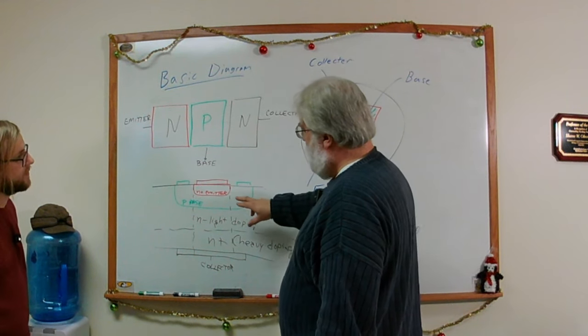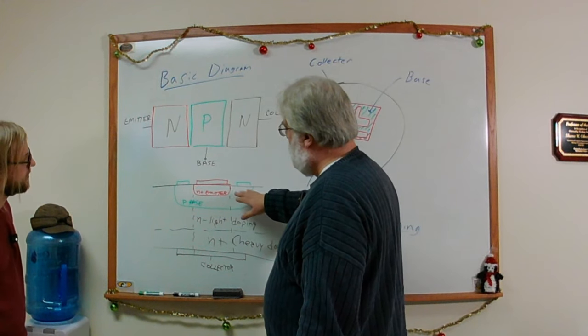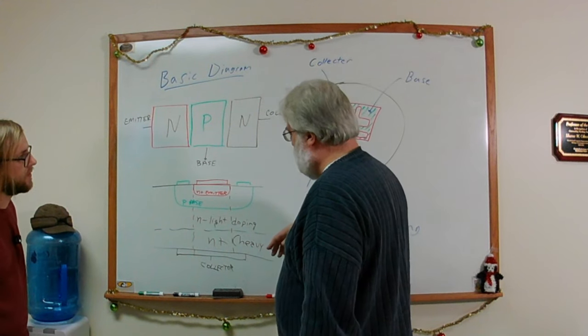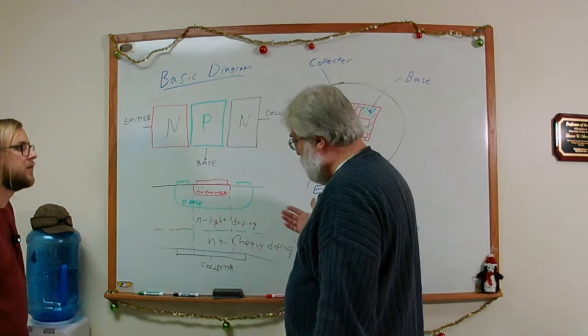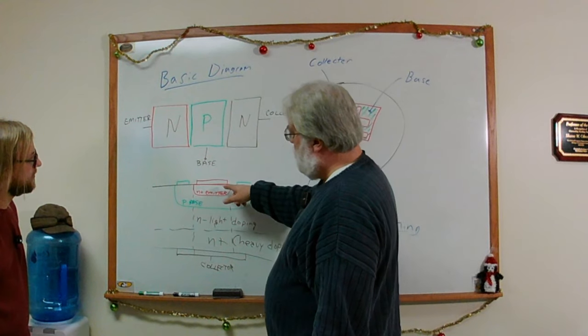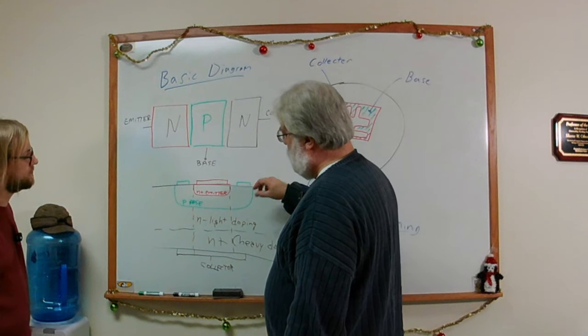The emitter is formed last. The collectors form first through that epitaxial layer, and then the base is typically diffused or implanted into it to form this counter doping of p-type material. That's typically in silicon, that would be boron. The n-type material is either arsenic, antimony, or phosphorus. Phosphorus is the most likely.